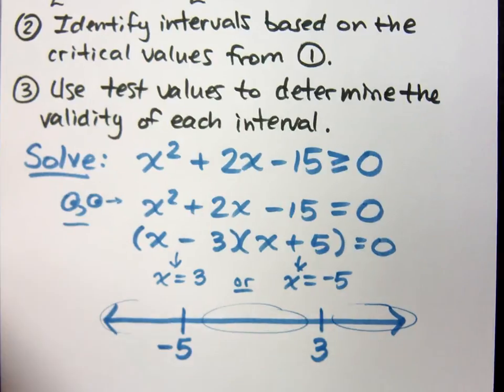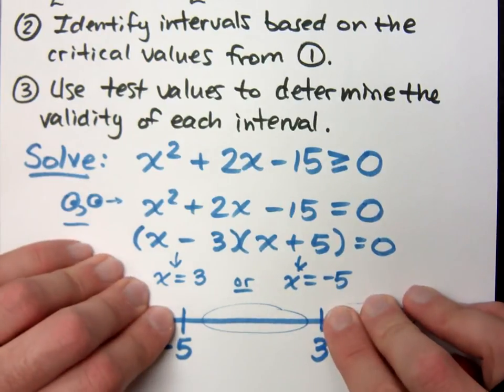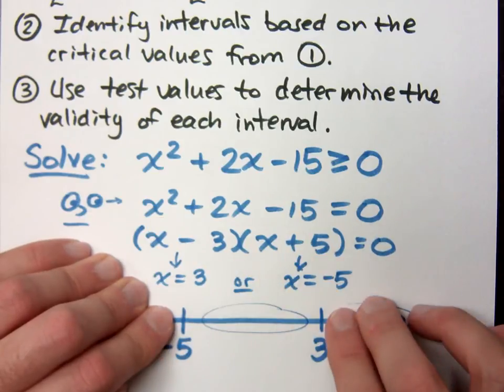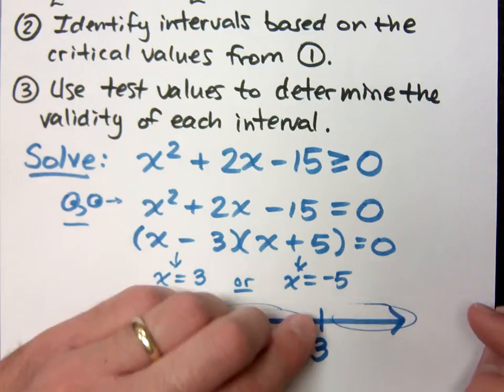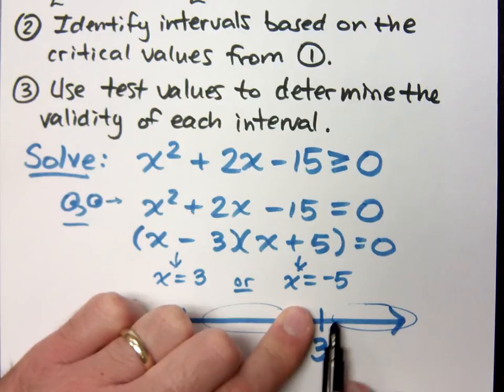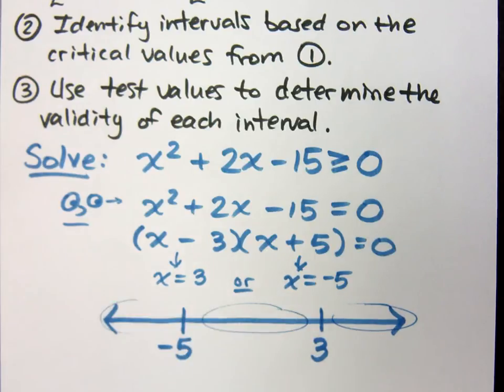Likewise, here in the middle, any number that I plug in between negative 5 and positive 3, if I plug it into this polynomial, it's going to give me something that's all the same sign, either all positive or all negative. And then lastly, over here, any value that I plug in from 3 and greater would give me the same sign, either positive or negative.